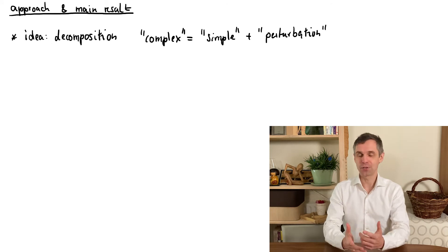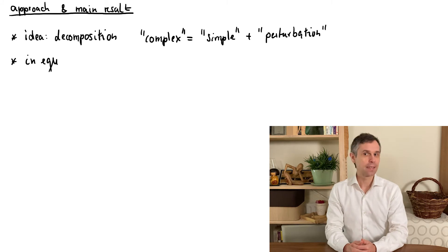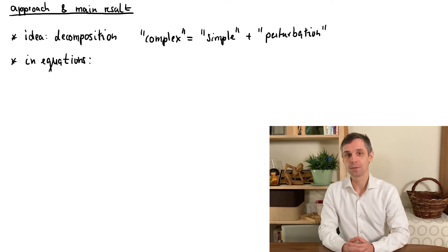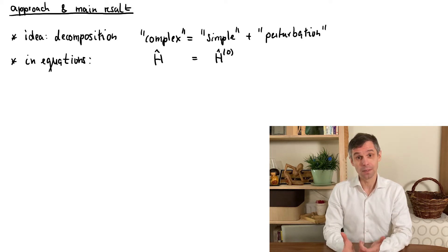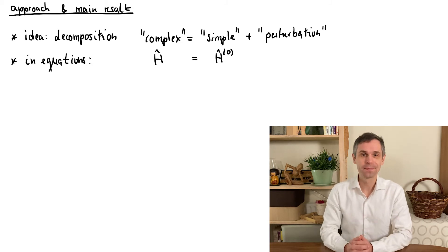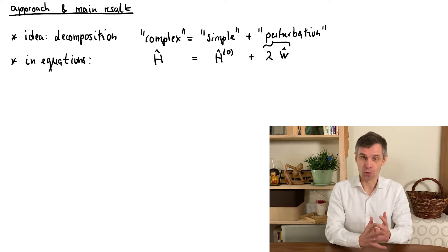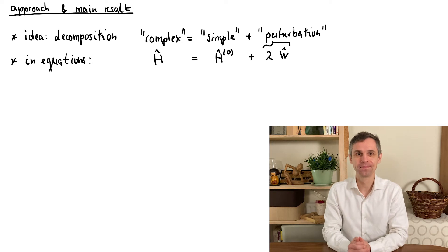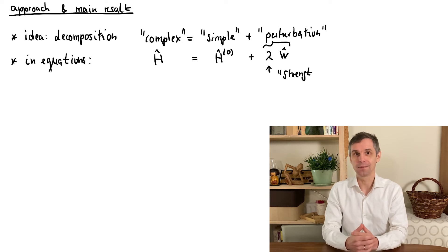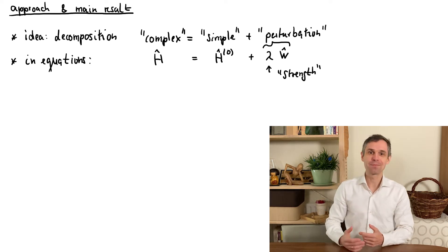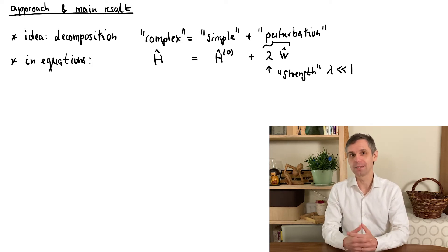So to apply perturbation theory to stationary systems we need to translate this picture into equations. This can be done by separating the Hamiltonian of our quantum system into a contribution describing the simple system that we understand very well. I sometimes also call this the original unperturbed or old system and the contribution arising from the perturbation. Including this we then have our more complicated new perturbed system. In this combination we include a dimensionless parameter lambda that measures the strength of the perturbation and we will generally assume that this parameter is small. In this way we make sure that our new system only differs very slightly from the old system.